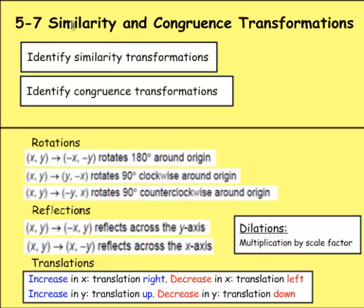Lesson 7 of Chapter 5 is on similarity and congruence transformations. First, we're going to identify similarity transformations and then identify congruence transformations.